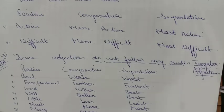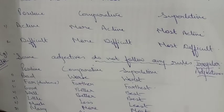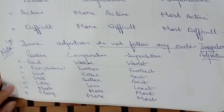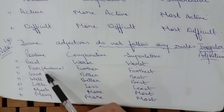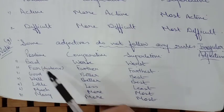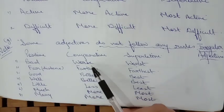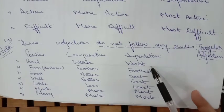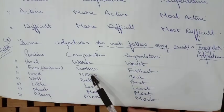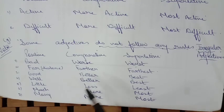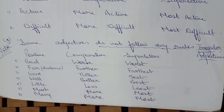Some adjectives are irregular and do not follow any rule. Memorize these irregular adjectives: 'bad' — 'worse' — 'worst'; 'far' — 'farther' — 'farthest'; 'good' — 'better' — 'best'; 'well' — 'better' — 'best'; 'little' — 'less' — 'least'; 'much' — 'more' — 'most'; 'many' — 'more' — 'most'.